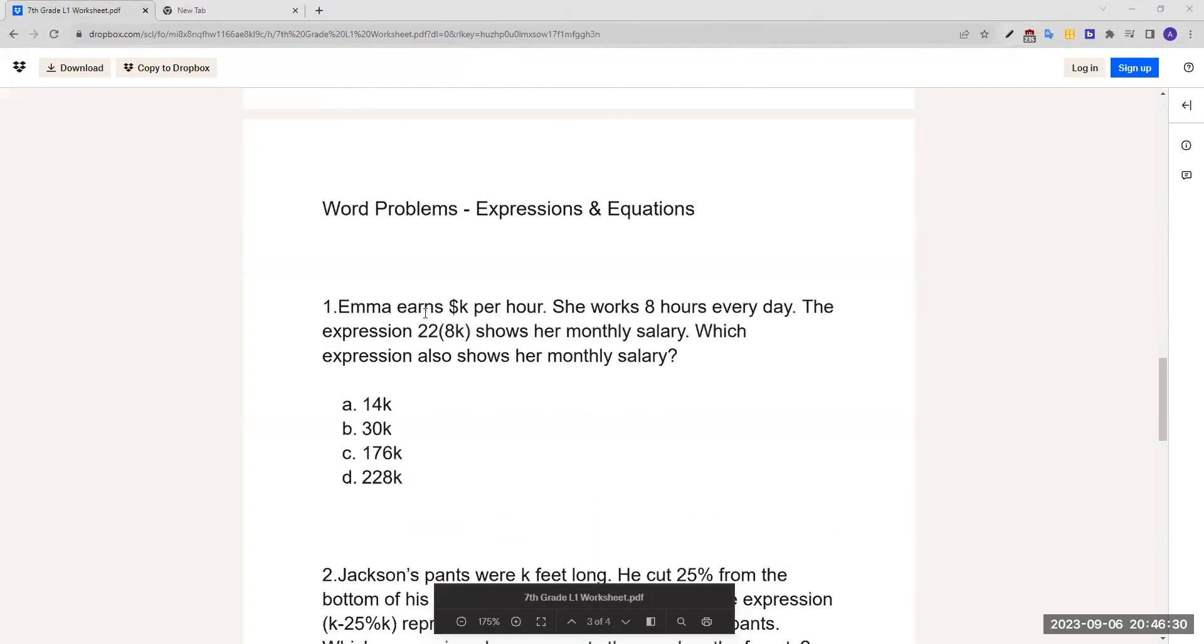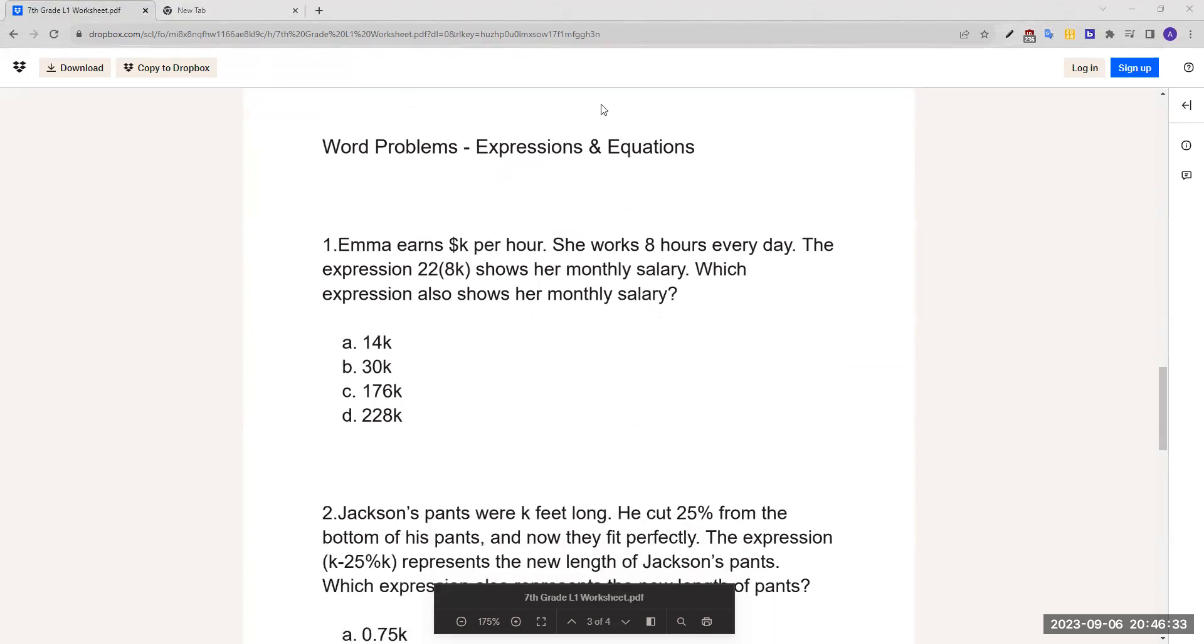Now let's do word problems, expressions, and equations. Emma earns $k per hour. She works 8 hours every day. The expression 22 parentheses 8k shows her monthly salary. Which expression also shows her monthly salary? We see here that they give the expression to us, which is this.